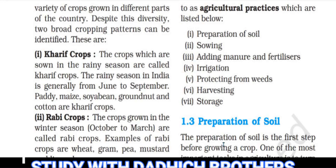The crops which are sown in the rainy season are called Kharif Crops. The rainy season in India is generally from June to September. Paddy, Maize, Soya Bean, Groundnut and Cotton are Kharif Crops.